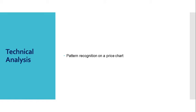Technical analysis involves pattern recognition on a price chart. Technical traders look for price patterns such as triangles, flags, and double bottoms. Based on the pattern, a trader will determine the entry and exit point. Unlike fundamental traders, a technical trader is not as concerned about why something is moving, because the trends and patterns on the chart are their signals.